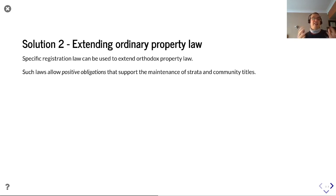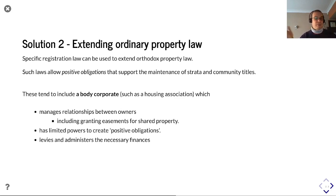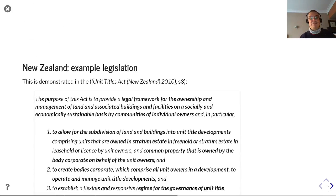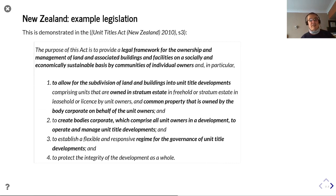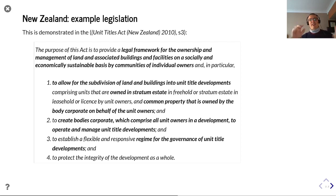However, citizens in many jurisdictions value ownership over leasehold. So solution two is to extend ordinary property law using specific registration law, which extends ordinary property law and allows positive obligations that support the maintenance of strata and community titles. These tend to involve a body corporate, such as a housing association, which manages relationships between the owners, including granting easements for shared property where required, and has limited powers to create positive obligations and levy and administer any necessary finances. New Zealand's legislation is a good example — the Unit Titles Act 2010, section 3, states the purpose of the act is to provide a legal framework for the ownership and management of land and associated buildings and facilities on a socially and economically sustainable basis by communities of individual owners.